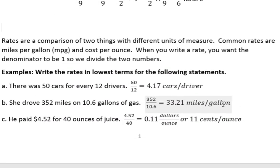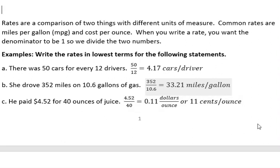And then we have rates and rates are different because they're comparing two things with different units of measure. Common rates are miles per gallon, cost per ounce, those kinds of things. When you write a rate, you want the denominator to be one. So we divide the two numbers out, like basically get rid of that denominator altogether.